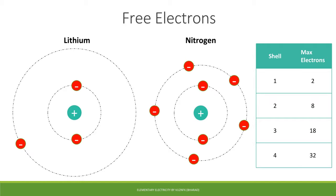The outer shell of lithium is much larger compared to nitrogen, meaning those electrons are much further from the nucleus — making it much easier for them to escape. These are called free electrons: electrons which can easily escape the electromagnetic force of attraction between the electron and the nucleus. Lithium has an abundance of free electrons, whereas in nitrogen the electrons are much closer to the nucleus. This defines whether a material is a conductor or an insulator.